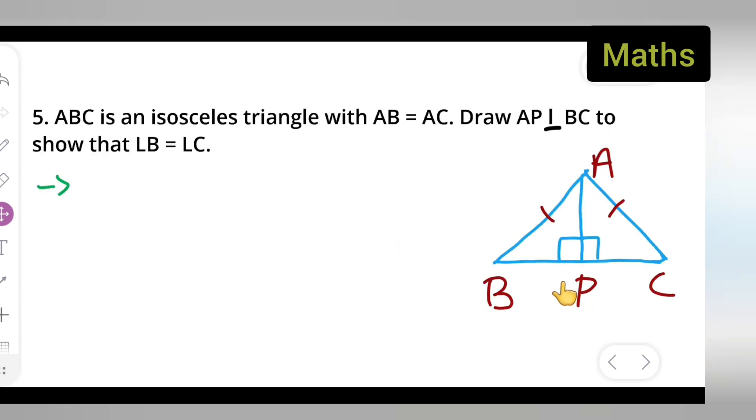Here I have already drawn the figure. ABC is an isosceles triangle, AB is equal to AC, and then you have to draw AP perpendicular to BC and show that angle B is equal to angle C.